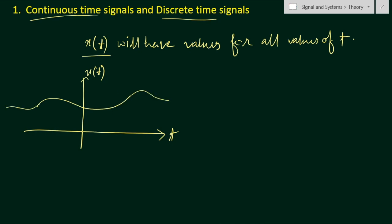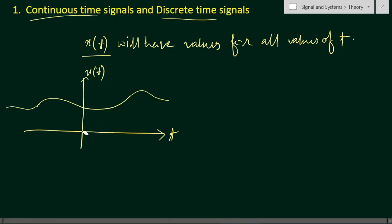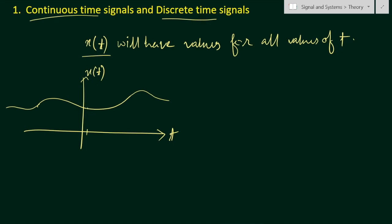At any point in time — for example at t equal to zero, x(t) has some value; at t equal to 10, x(t) also has some value — this is a continuous time signal. That means you will have the value of x(t) for every instance of time.